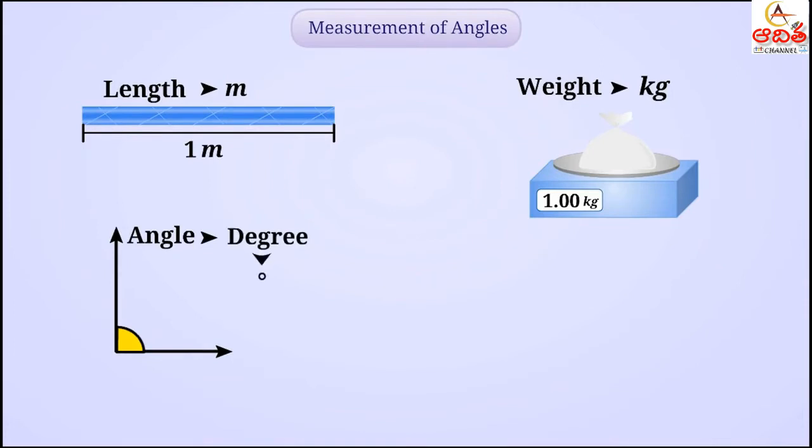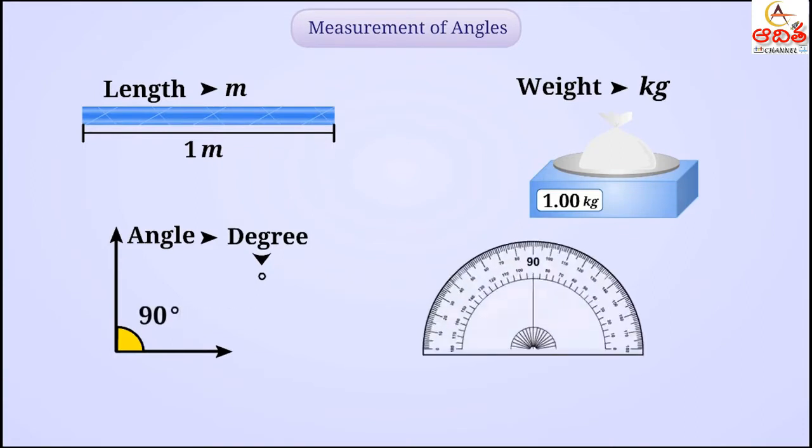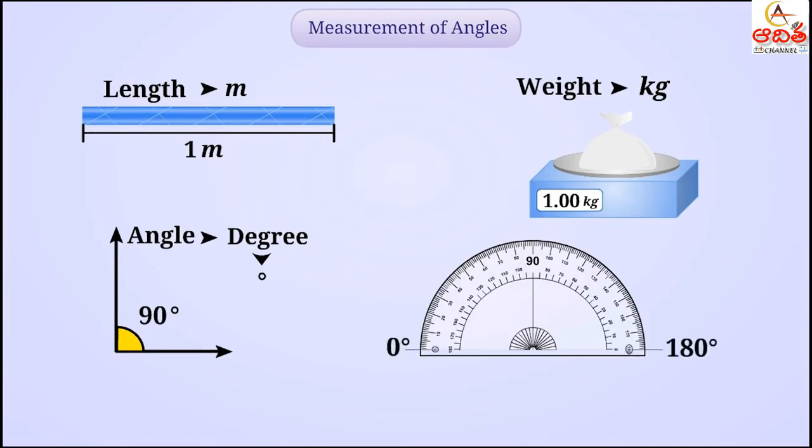For example, the measurement of this angle is 90 degrees and is expressed as 90 degrees. Using the protractor, we can measure 0 degrees to 180 degrees. So let's find out how to measure an angle.